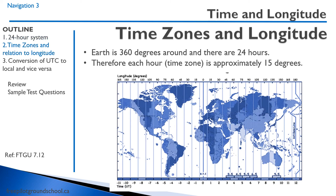The Earth is 360 degrees around, and there are 24 hours in a day. It means the Earth rotates once a day — approximately 360 degrees in 24 hours. So if we divide that out, that's 15 degrees per hour. So each time zone, each hour, is approximately 15 degrees.